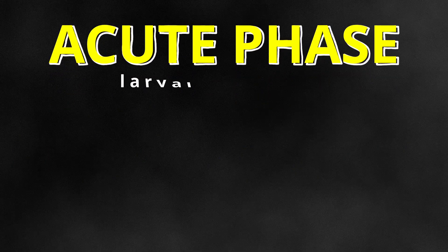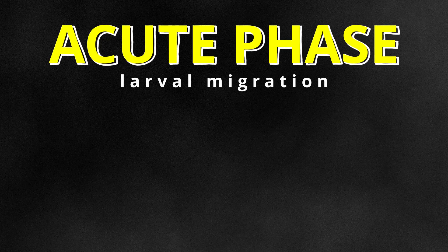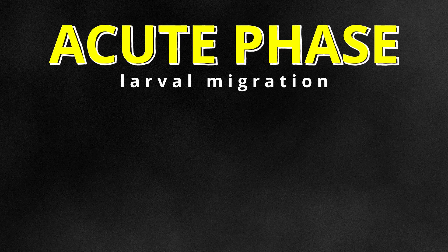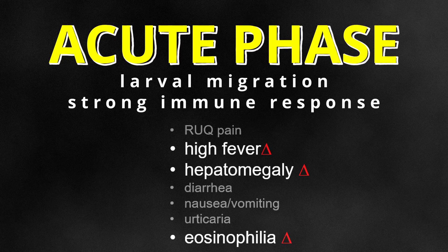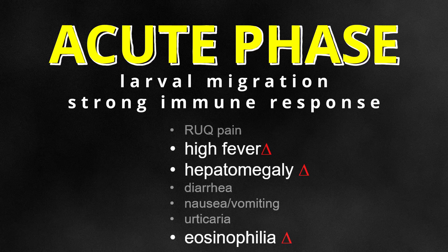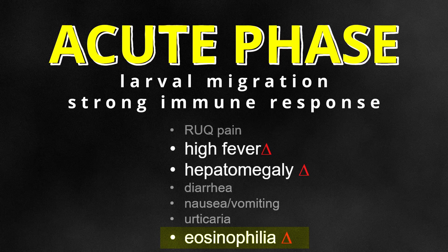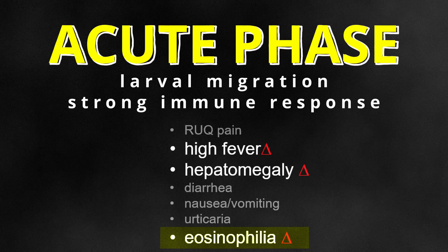Symptoms associated with fascioliasis can be divided into two major phases: the acute phase and the chronic phase. The acute phase is characterized by the larval migration discussed earlier. Due to the invasive nature of the larvae as it penetrates through different tissues and feeds on the liver, the immune system responds strongly, leading to symptoms including vague abdominal pain in the vicinity of the liver, occasional diarrhea, nausea and vomiting, fever, eosinophilia, and hepatomegaly. Eosinophilia is highly correlated with the acute migration phase, and a specific Fasciola antigen can be detected in the blood during this phase, aiding in early diagnosis.